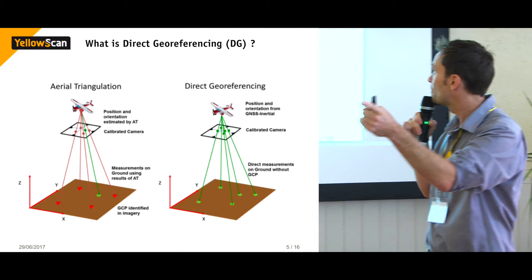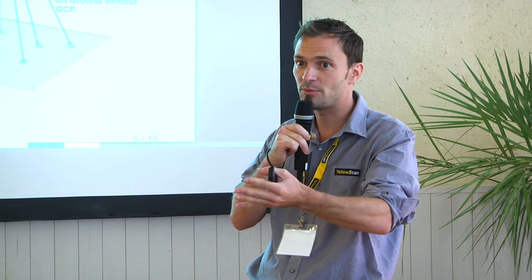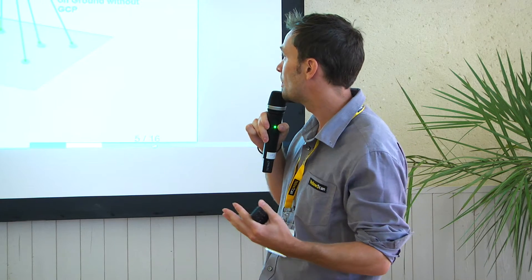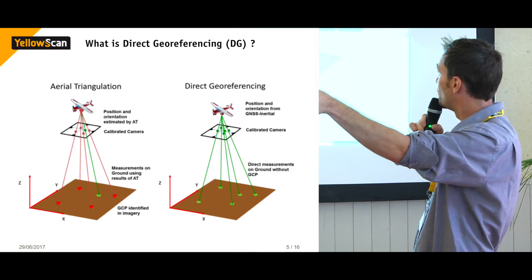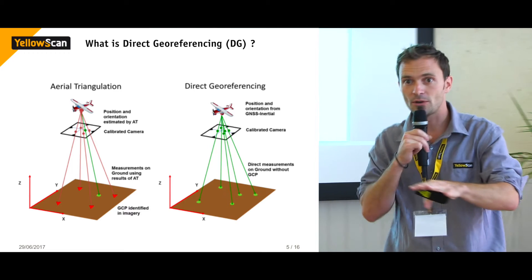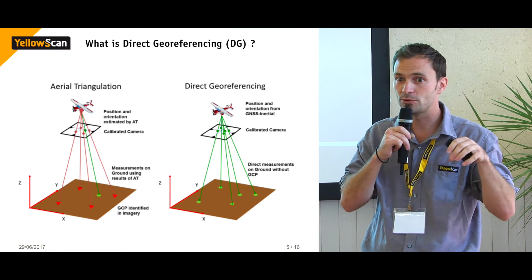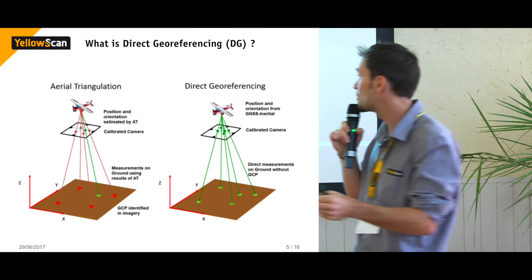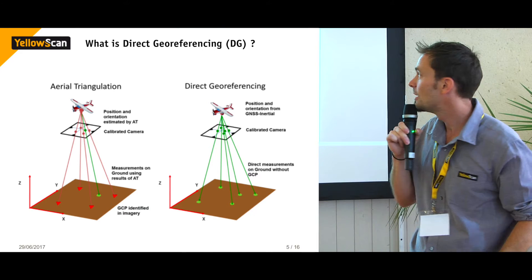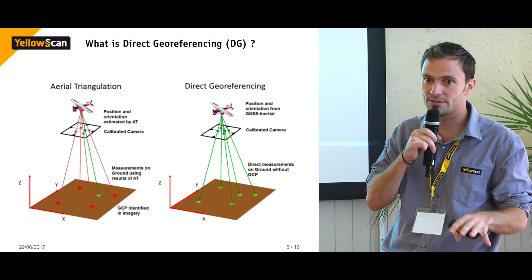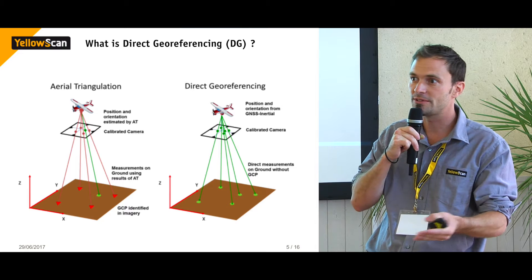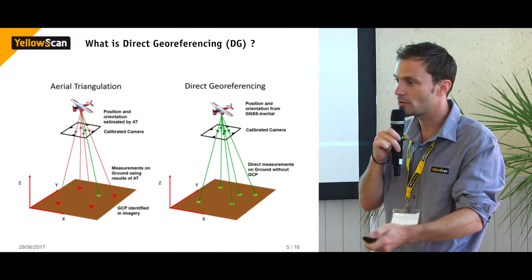With the direct georeferencing process, because you're using high-grade IMUs — the Surveyor has an Applanix APX-15 in it — you're down to about 70 degree accuracy in roll, pitch and heading. So you're able to get full accuracy of the position and orientation of your platform, and therefore accurately position each point of your LiDAR or photogrammetry pixel, allowing you to quickly georeference your data.